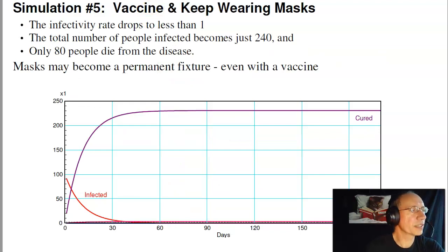So let's ask a fifth question. Suppose you had a vaccine that reduced the time it takes to recover from 20 days down to five, and you continue wearing masks, so that n times p drops by three times. In that case, the infectivity rate drops below one, and the disease just dissipates on its own.